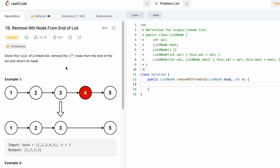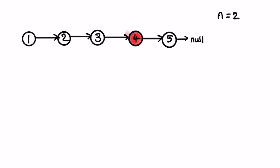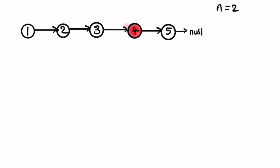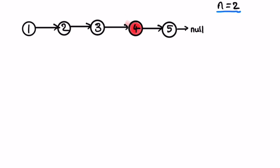Let's take the same example — this linked list where n is equal to 2. Since n equals 2, we have to delete the second node from the end. This is the first node from the end and this is the second node, and we have to delete this element. A linked list is all about pointers pointing to the next element. Since this is a singly linked list, each node points to the next node, so basically we have to remove this connection.